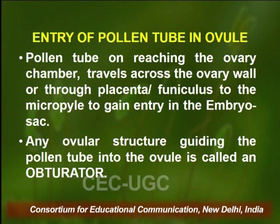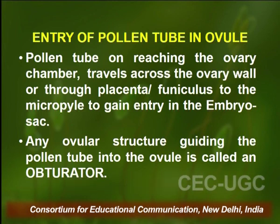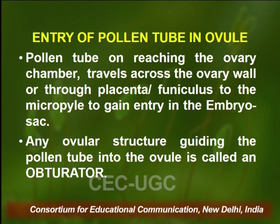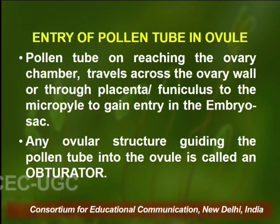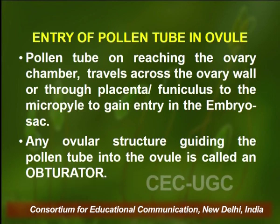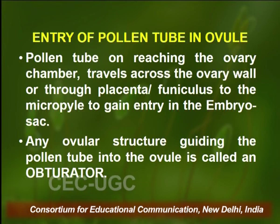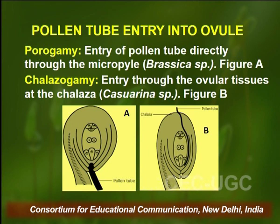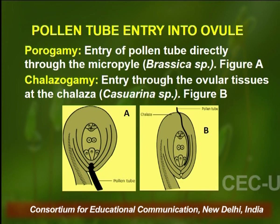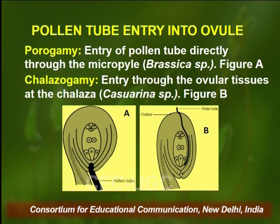On reaching the ovary chamber, the pollen tube travels across the ovary wall or through the placenta or through the funiculus to the micropyle to gain entry into the embryo sac. Whatever path it takes, it enters the ovule through the micropyle. Any ovular structure that guides the pollen tube into the ovule is called the obturator. Porogamy is when the tube directly enters through the micropyle, as in Brassica; chalazogamy is when the tube enters through the ovular tissues towards the chalazal region, as seen in Casuarina.